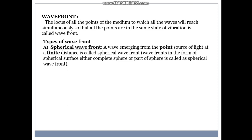The different types of wave front are spherical wave front, which is emerging from a point source of light at a finite distance. That is called spherical wave front. Wave fronts in the form of spherical sphere, either complete sphere or part of the sphere, is called spherical wave front.